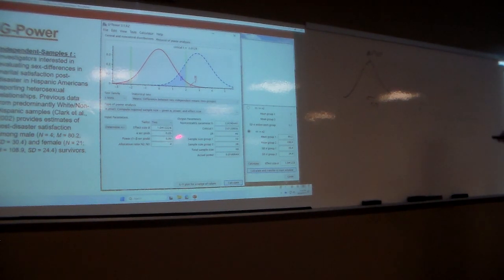Go through and hit calculate. And again, here it's going to give us group one, 10 people. Group two is going to be 38 on this four to one thing. Total sample size, 48. Actual power, 0.81. I'm going to need some more people here. Questions about the independent sample test?